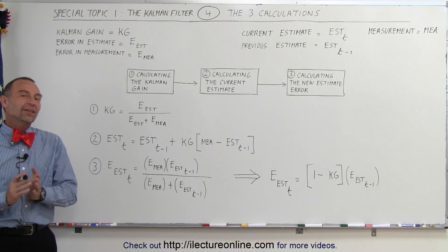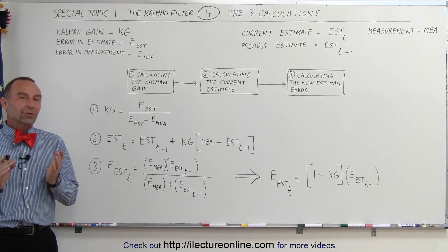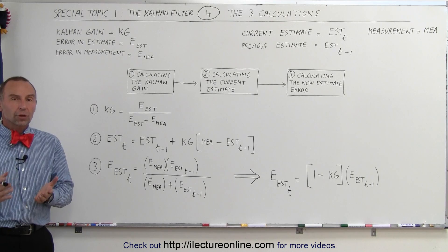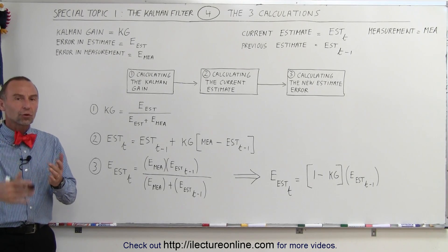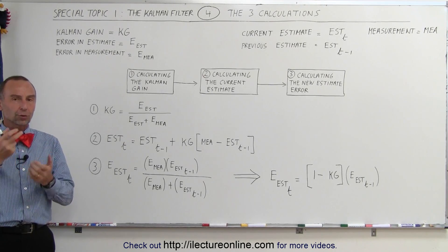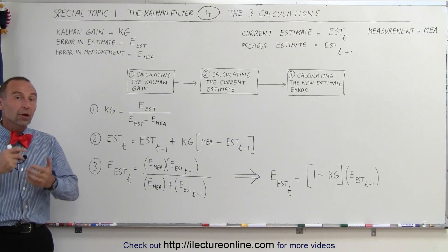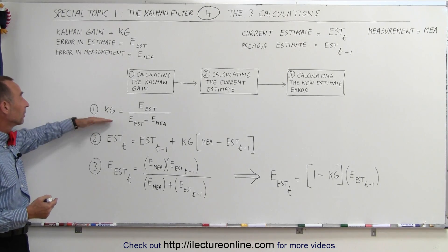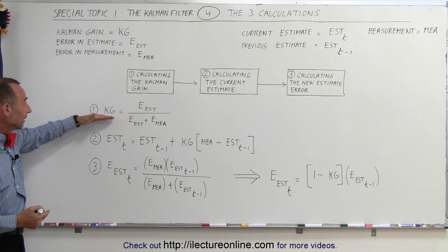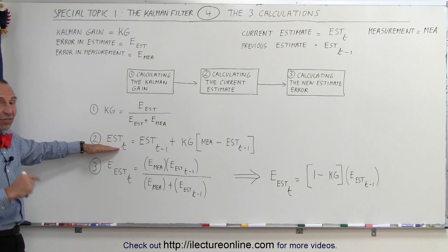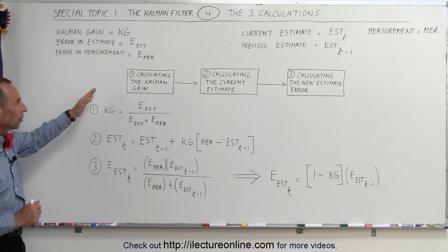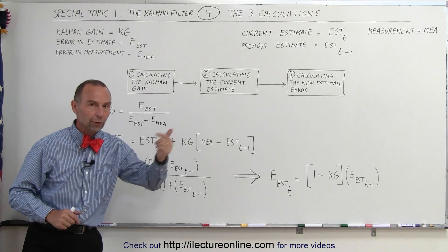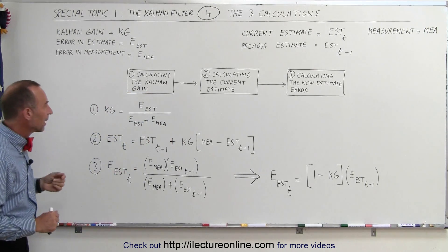Welcome to ElectronLine. Let's take a look at the three main equations used during Kalman filtering. These are iterative equations — we do them each time we get a new data point. We recalculate the Kalman gain, we recalculate the new estimate, and we recalculate the new error in the estimate. These are the three processes that we go through over and over again.